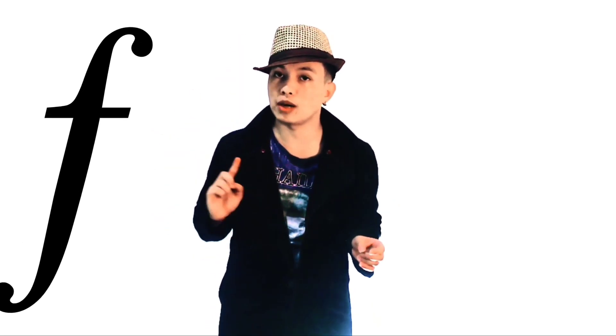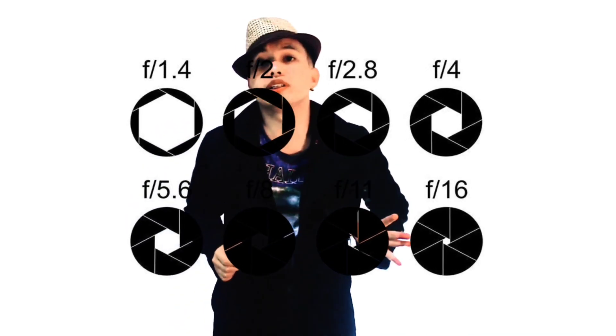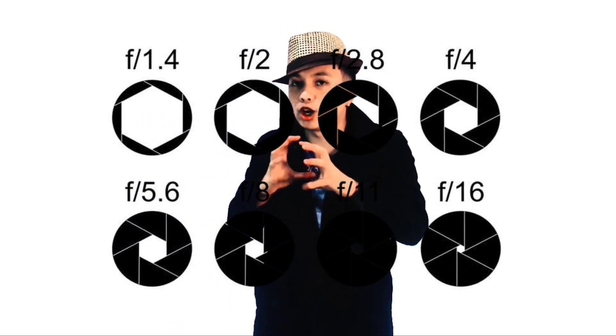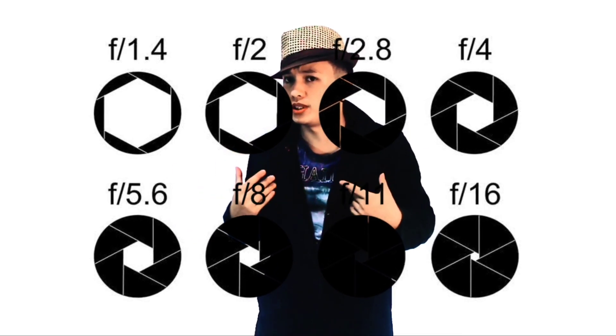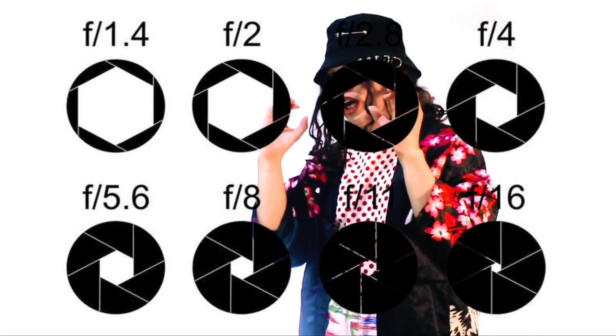The last one is aperture. Aperture is the size of the opening in your lens — you can actually see it happening with those blades inside opening and closing. That hole expanding or shrinking inside the lens is the aperture, represented by the F symbol on your camera. Here's where it gets confusing: the smaller the F number, the bigger the hole and the more light comes in. The higher the number, the smaller the hole and the less light comes in.